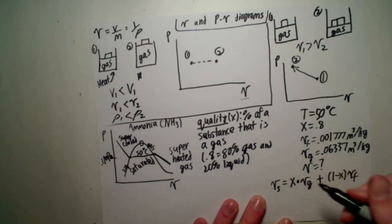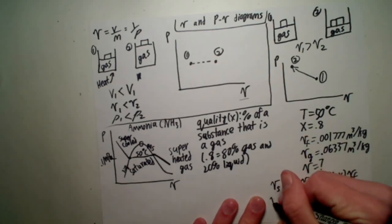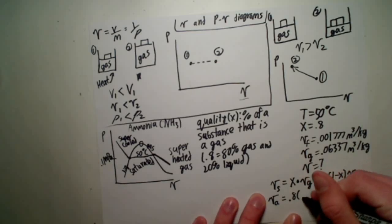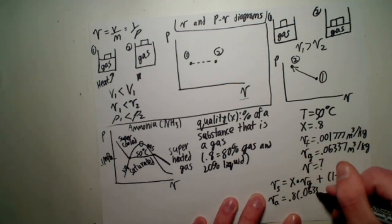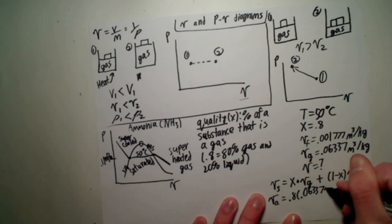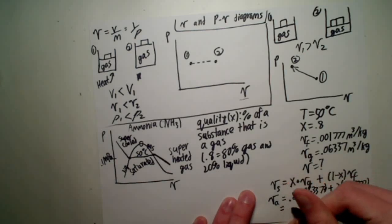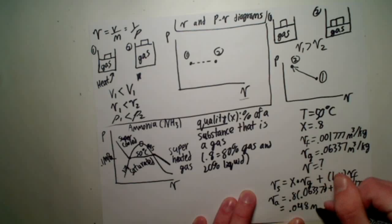So for instance, the specific volume of ammonia that we're looking for equals 0.8 times 0.06337, plus 0.2 times 0.001777, which roughly equals 0.048 meters cubed per kilogram.